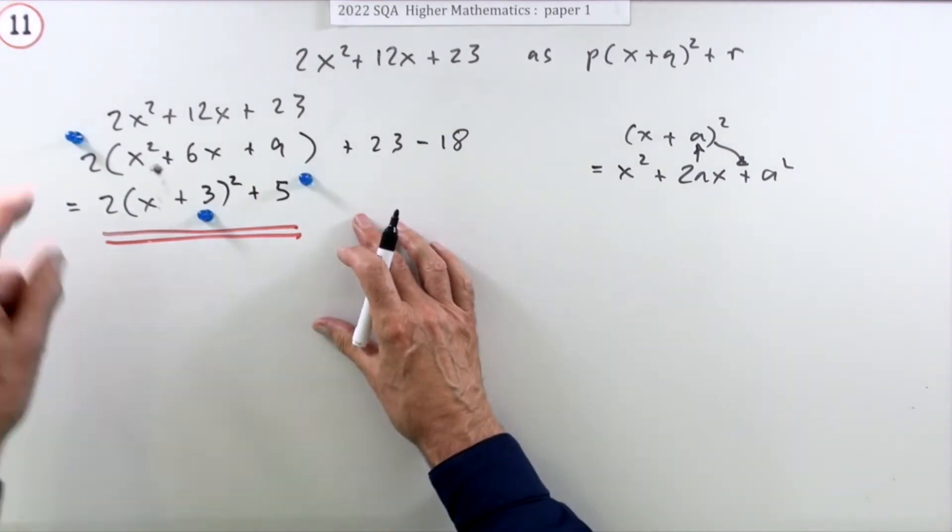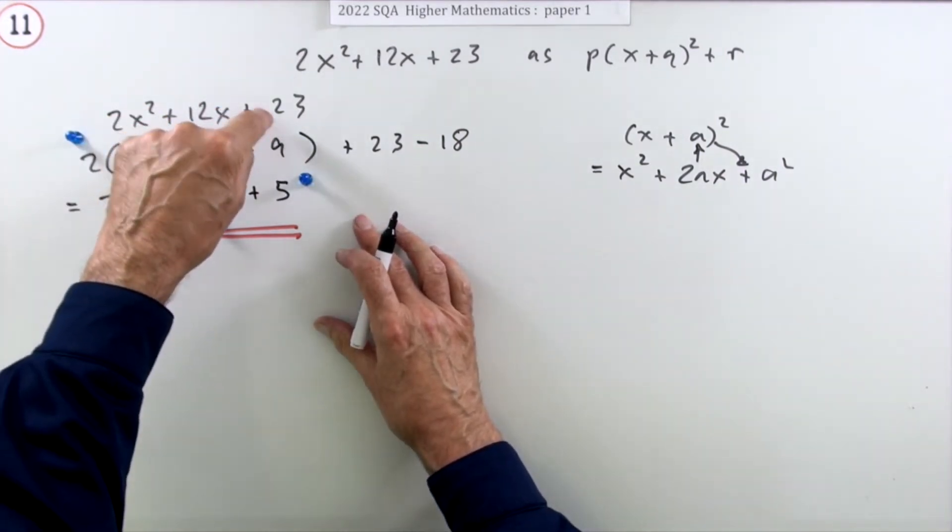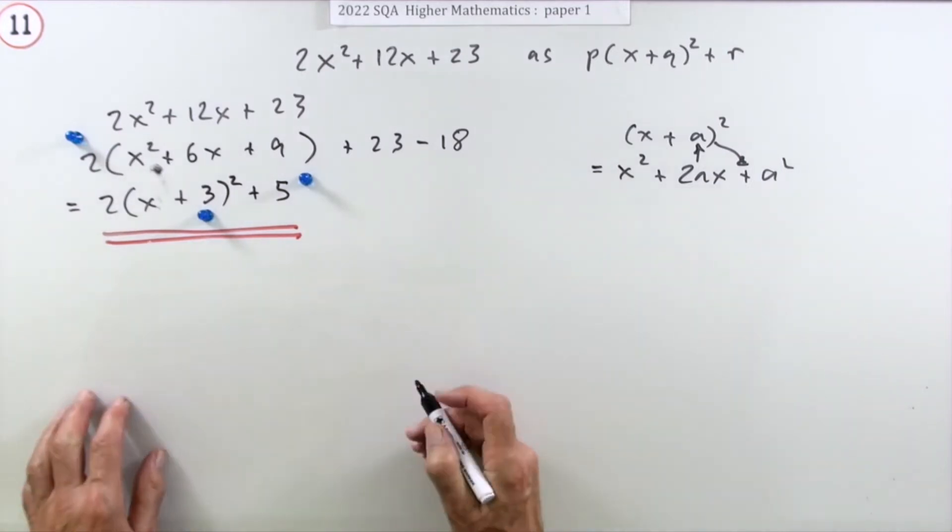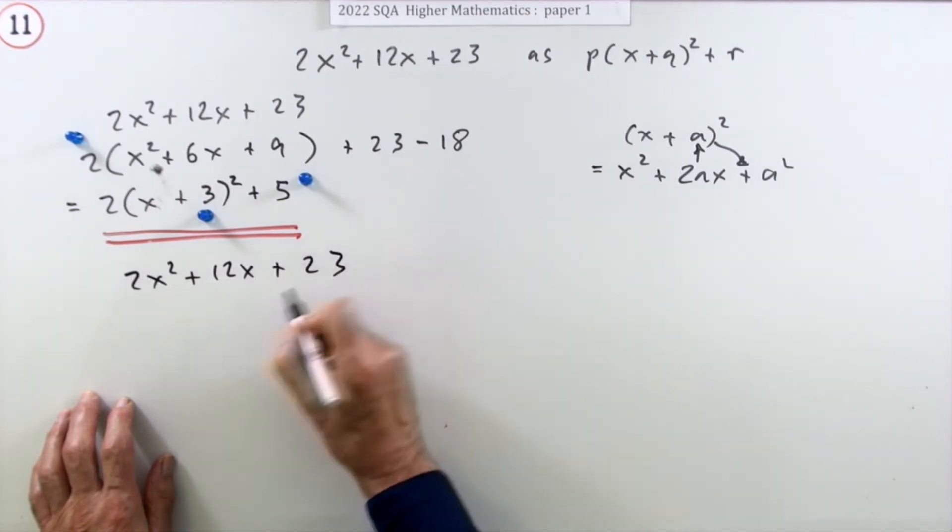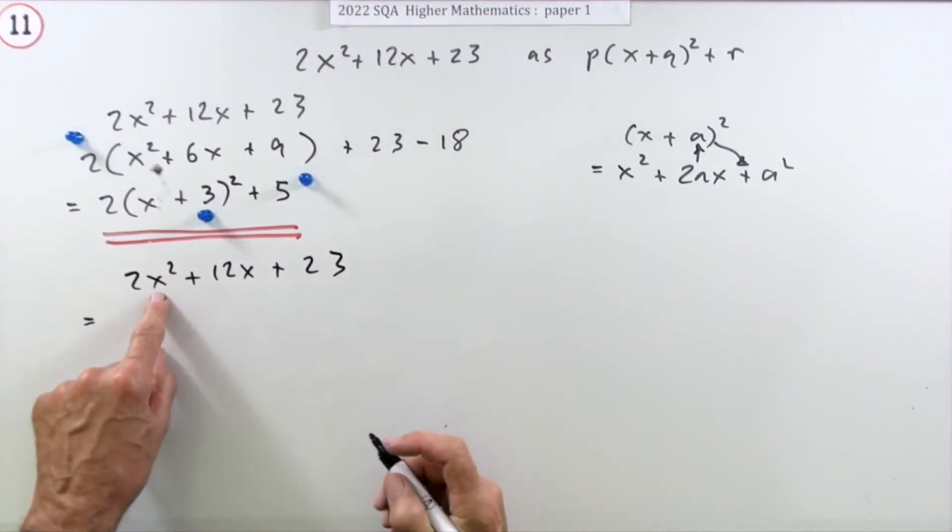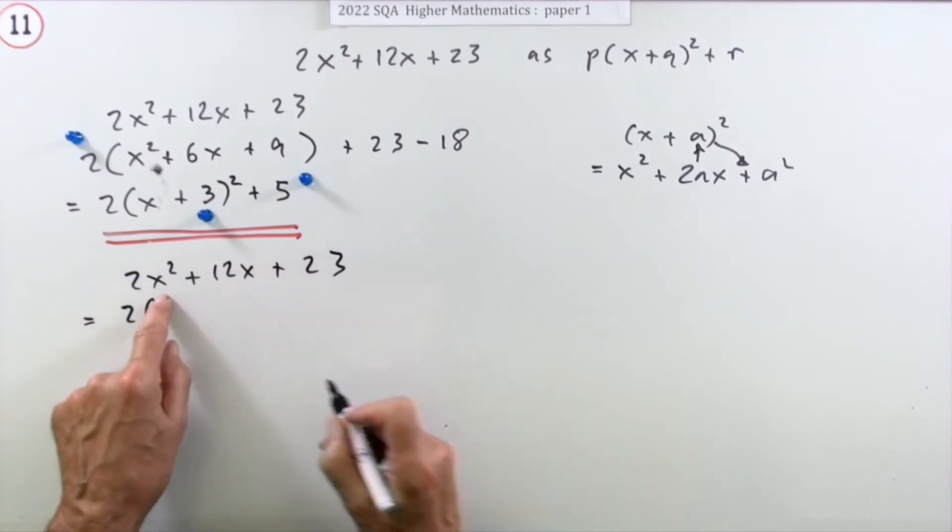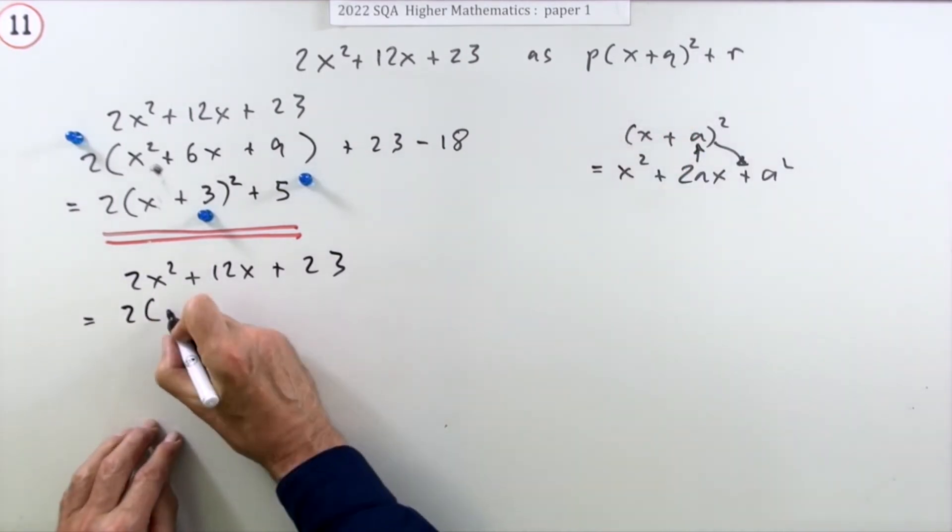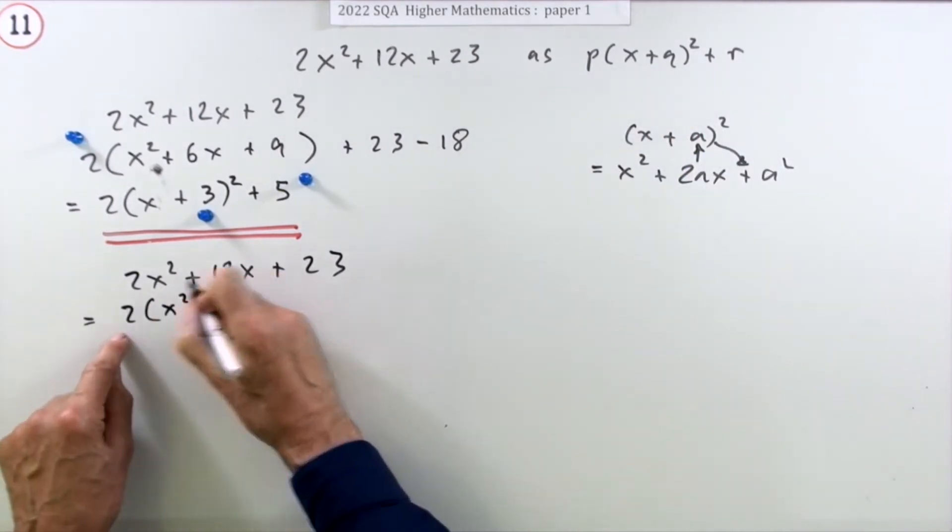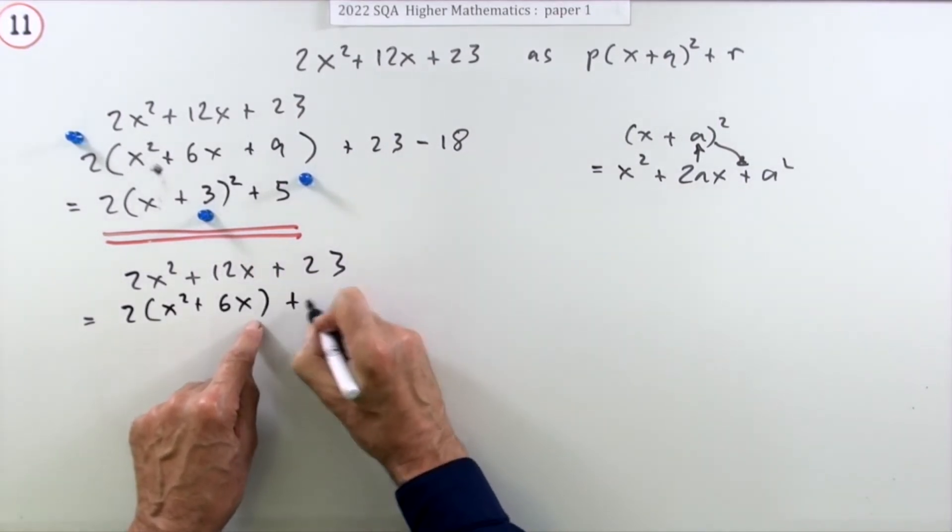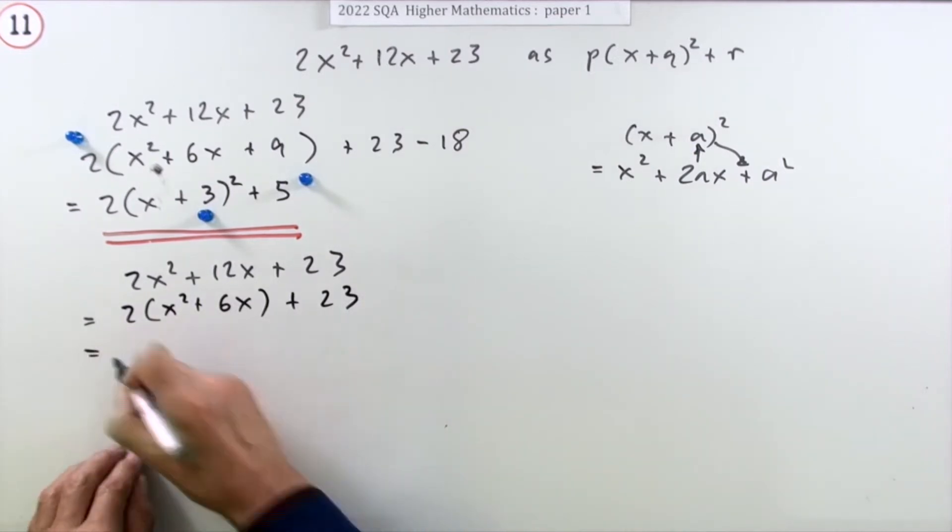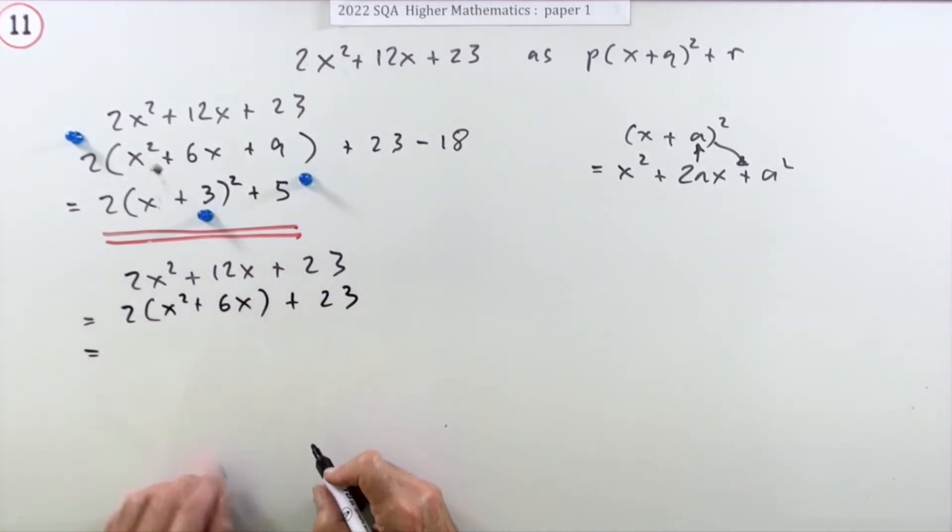Now the other way just involves how do you handle this extra term, this nine that was necessary to complete the square. So I'll start off the same way as before and take that two out. That'll be x² + 6x, but this time I won't leave a space.